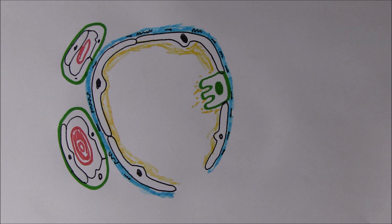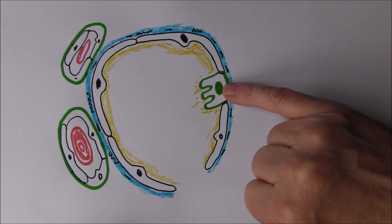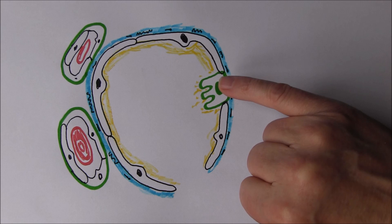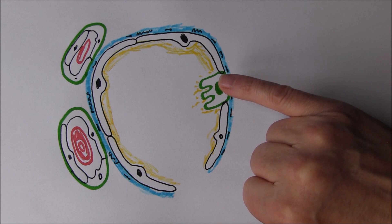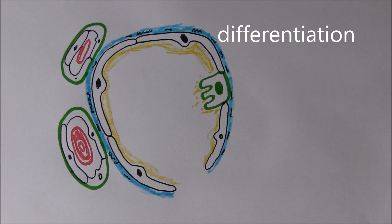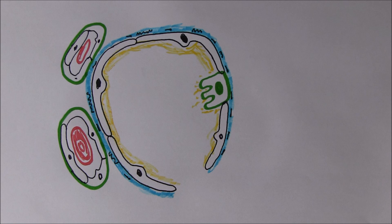What actually happens if there's damage to the lung is that it's the type 2 cells, the type 2 pneumocytes, that divide - these are the mitotic cells. If there's damage to the lung, these cells will divide, and once they've divided they can differentiate into new type 2 pneumocytes, but they can also differentiate into type 1 pneumocytes. So really these are the stem cells, if you like, of the alveoli.